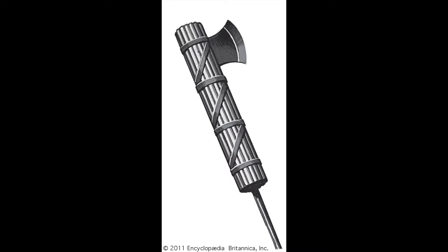In the context of fascism, the symbolism should be clear. The nation is the bundle of rods. The individual human being is the single rod. In the symbolism, it is obvious that the nation is more powerful and more important than the individual. But there are other implications to be gleaned from the symbolism.